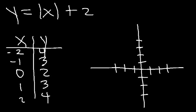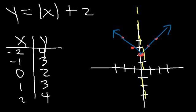So the first point is (0, 2), then we have (1, 3), (-1, 3), (2, 4), and (-2, 4). Whenever you have an absolute value expression, it typically forms a V-shape. The axis of symmetry is the x-coordinate of the vertex — that's where you have symmetry in the graph. So the axis of symmetry is the equation x is equal to 0.